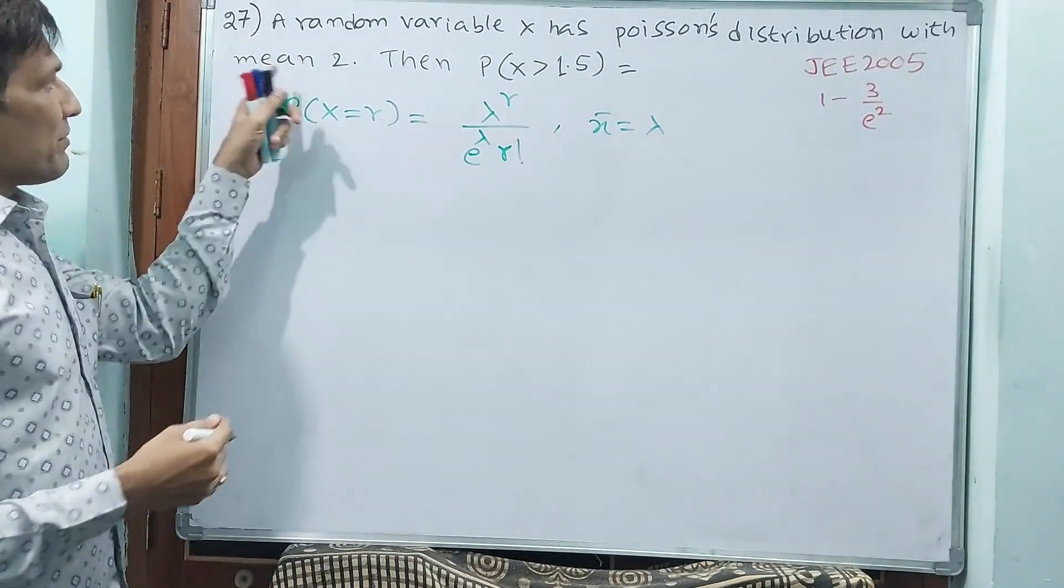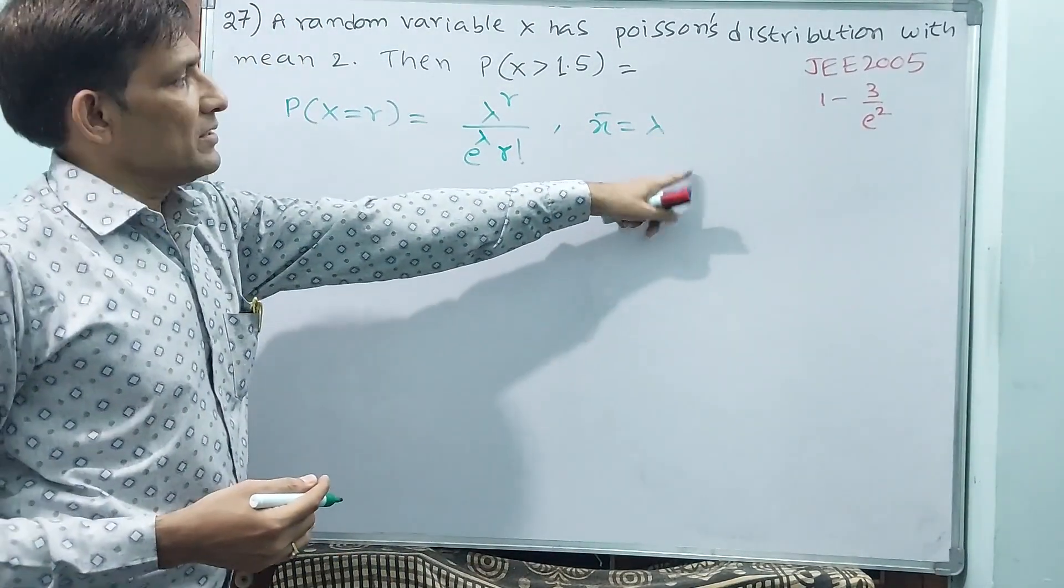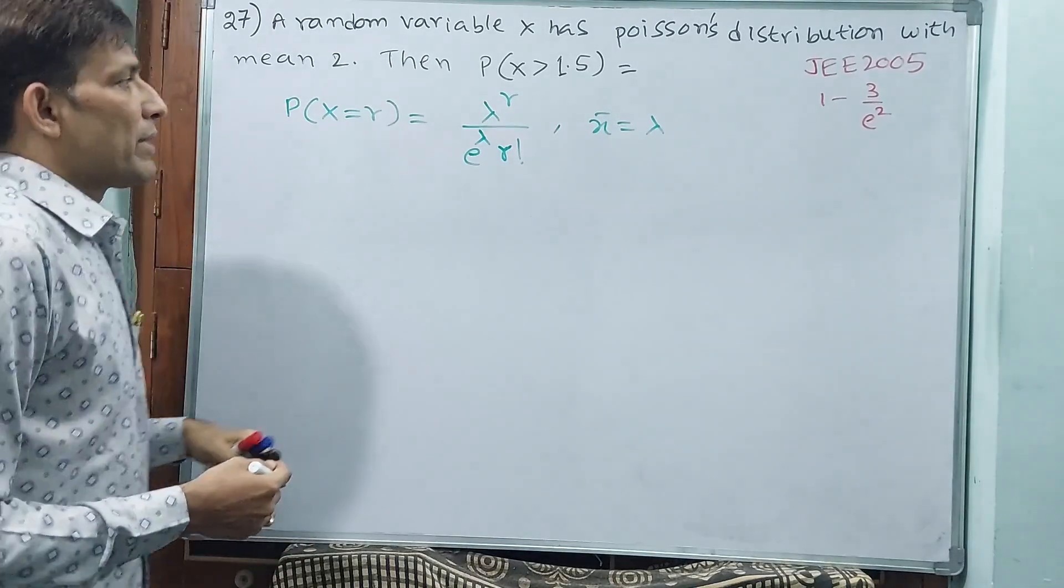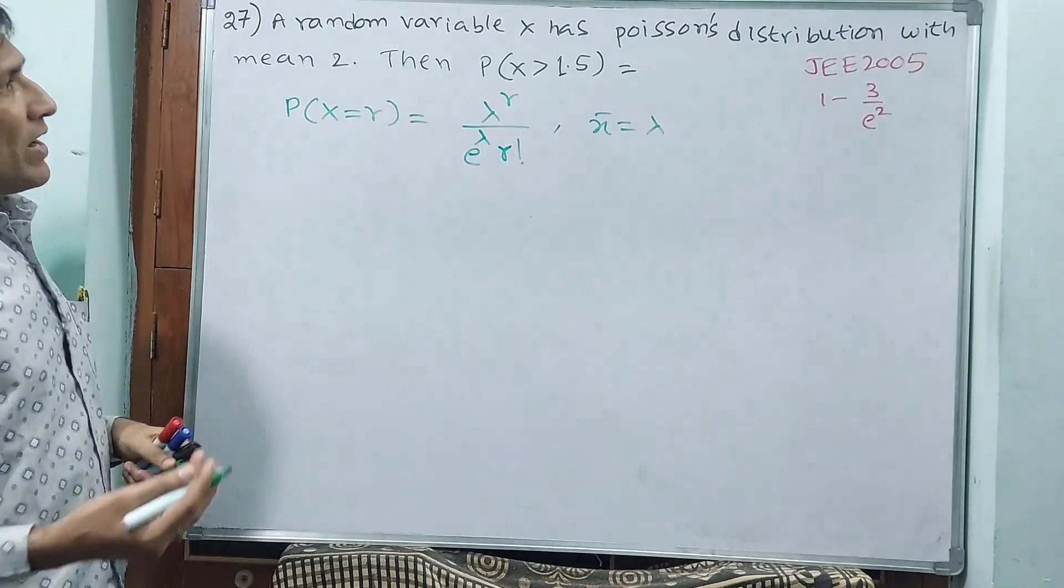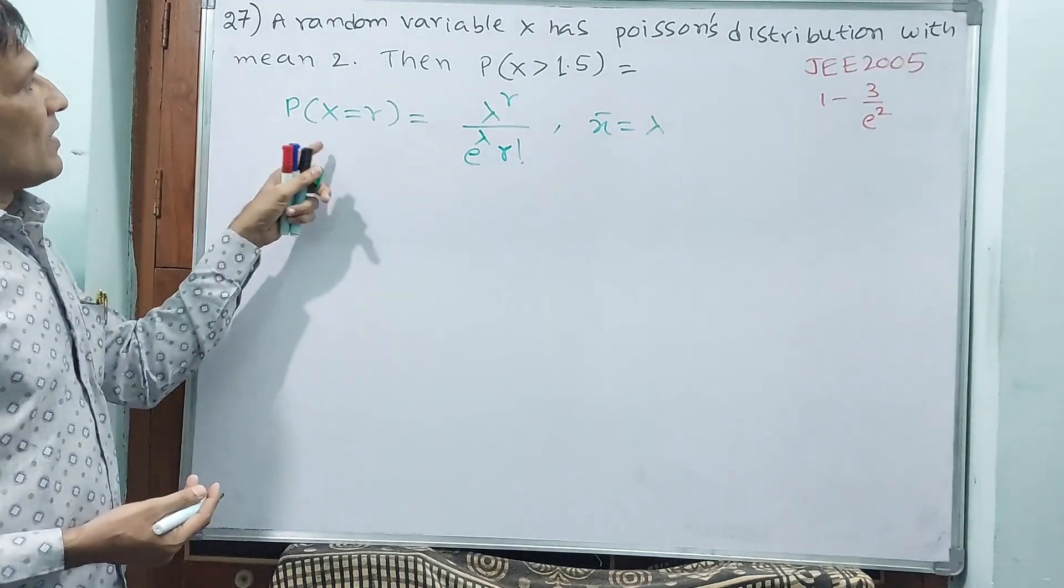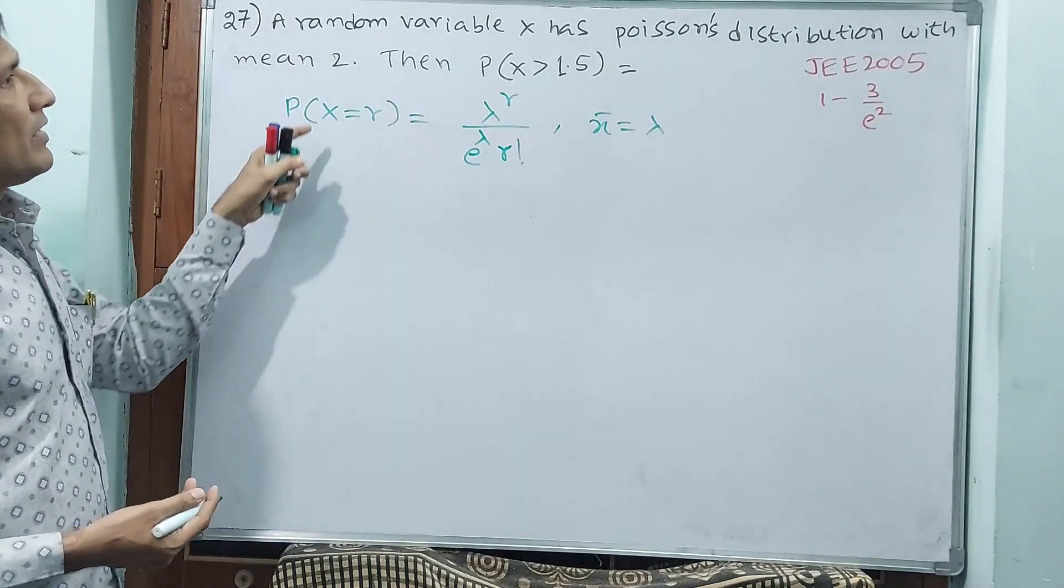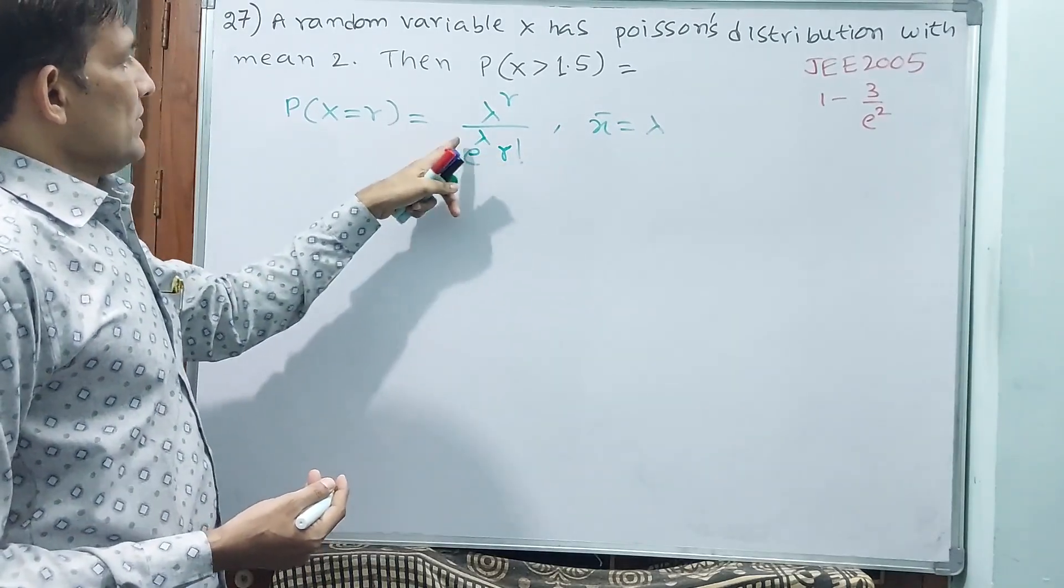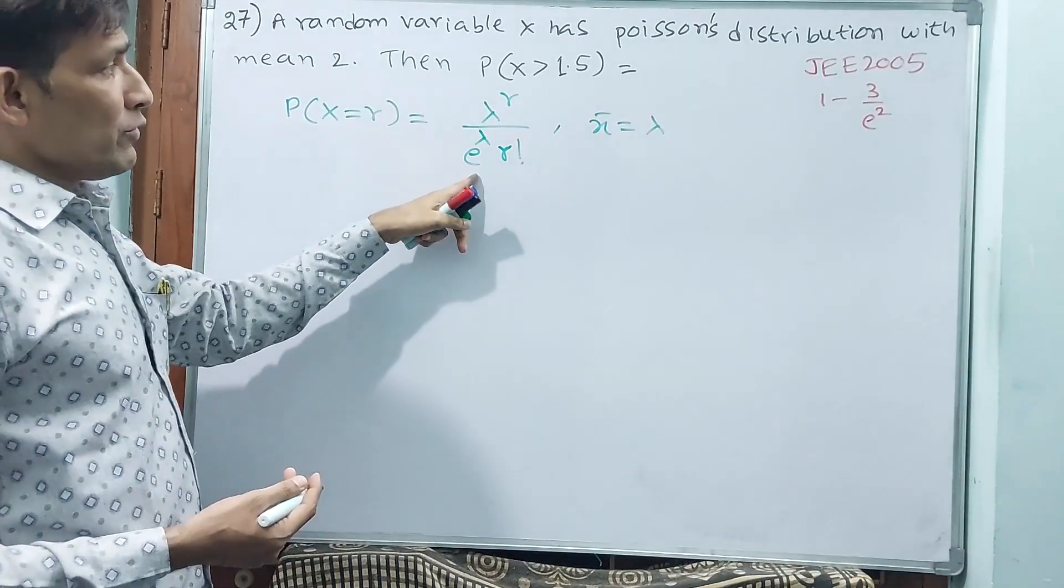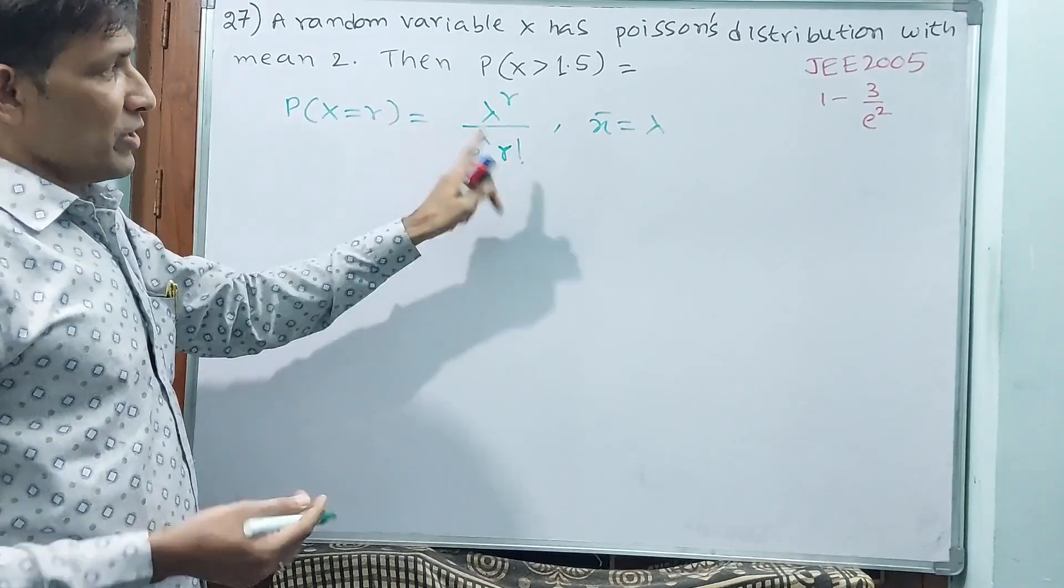Even variance also. But here mean only is given. If variance comes also, variance is equal to lambda. What is r? r we are going to decide afterwards. e we know very well, lambda no, we require r only.